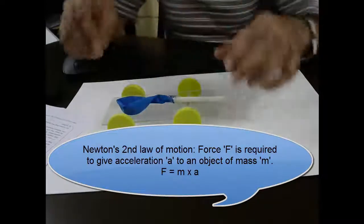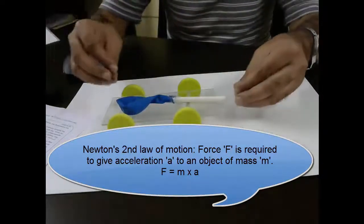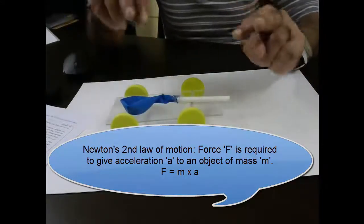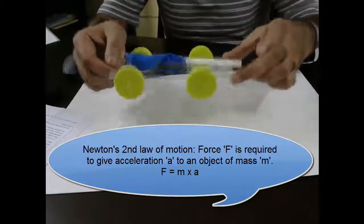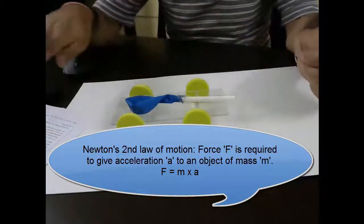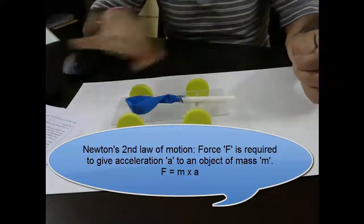Just look at it this way that if there is a force F which is making the car move, it is the multiplication of two things: number one, the mass of this car, and number two, the acceleration by which it is changing the speed or moving faster.